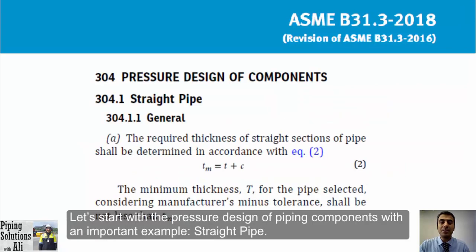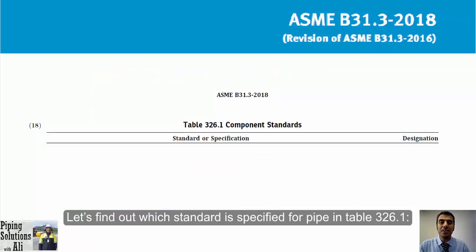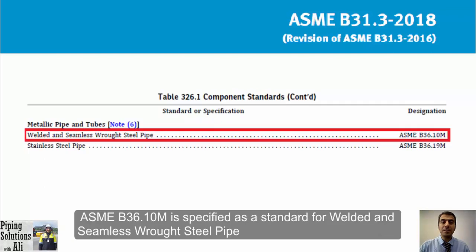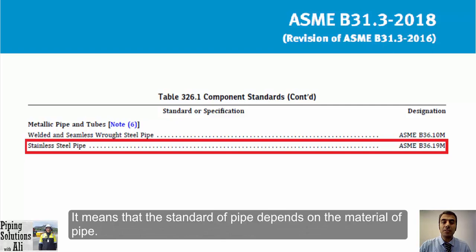Let's start with the pressure design of piping components with an important example: a straight pipe. In Table 326.1, ASME B36.10 is specified as the standard for welded and seamless wrought steel pipe, and ASME B36.19 is specified for stainless steel pipe. The applicable standard depends on the material of the pipe.